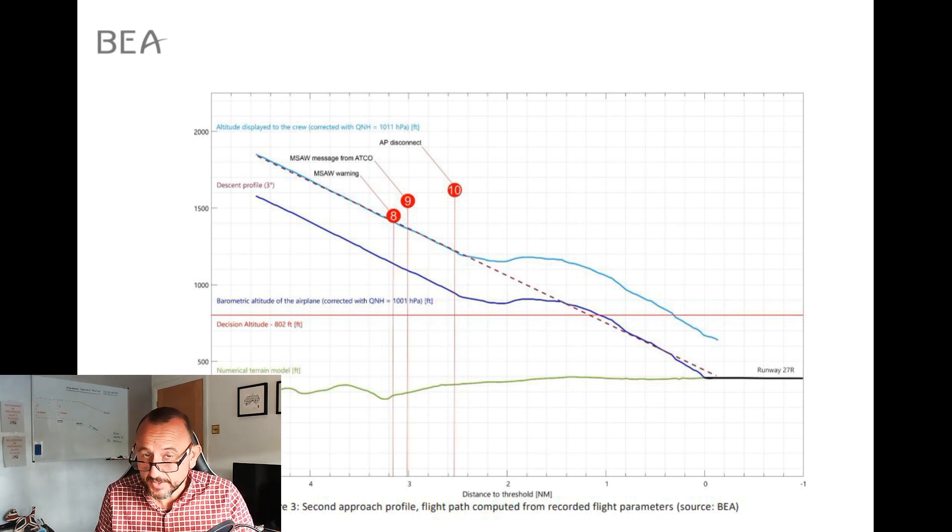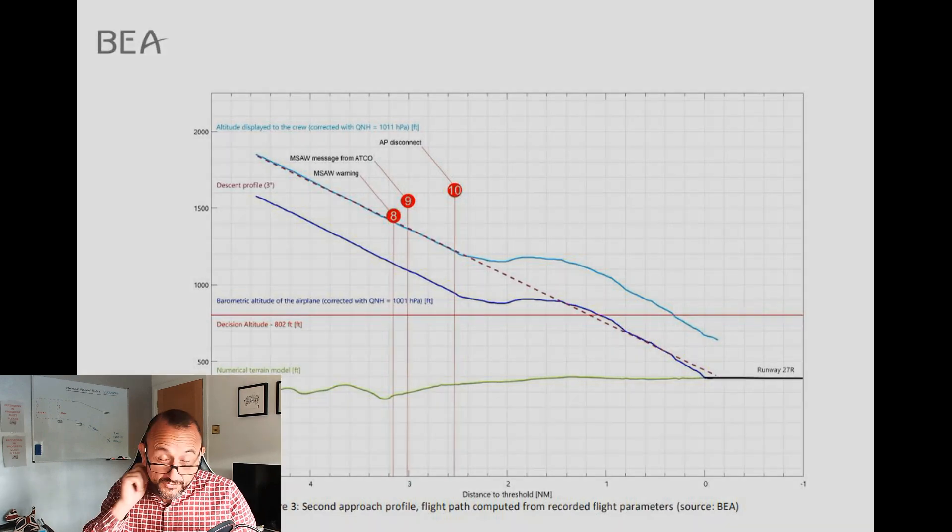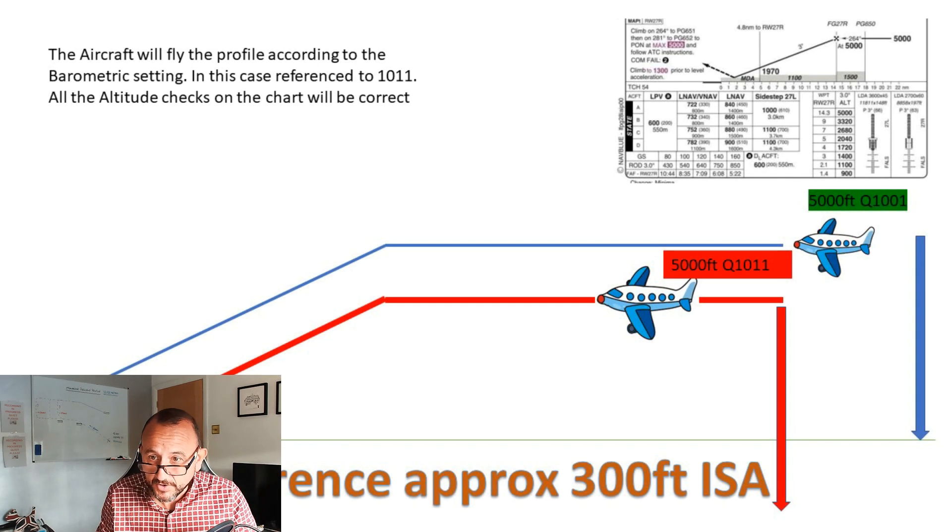Or the trajectory that was supposed to fly. At the top here you've got 5,000 feet on 1001, which was the correct QNH on the ATIS, and then the 5,000 feet on 1011.